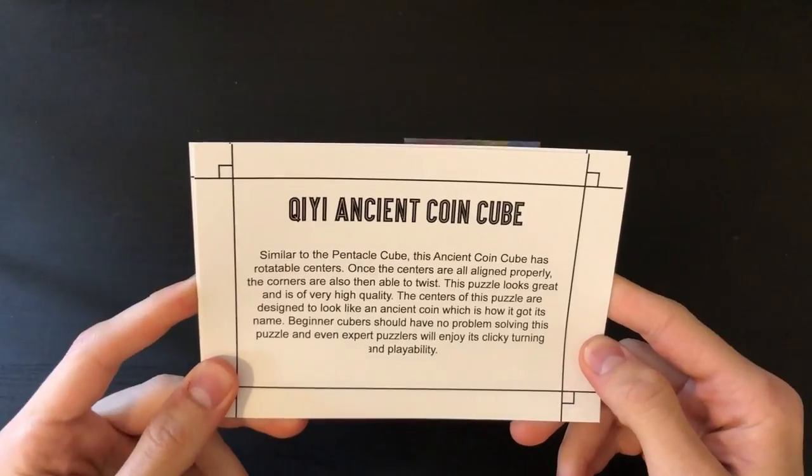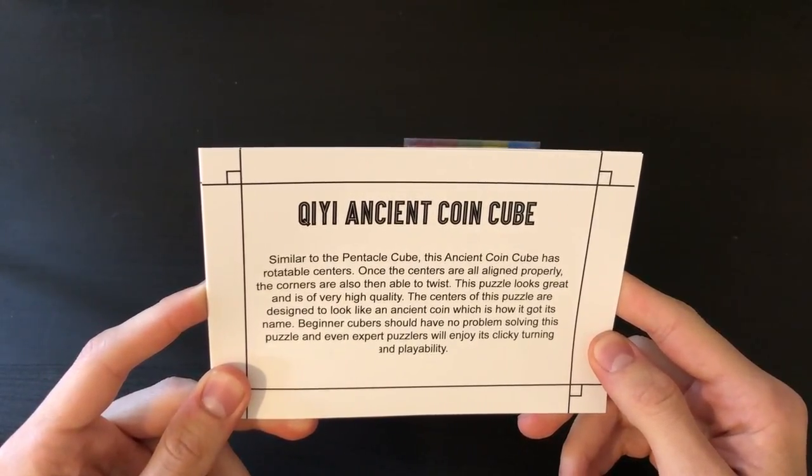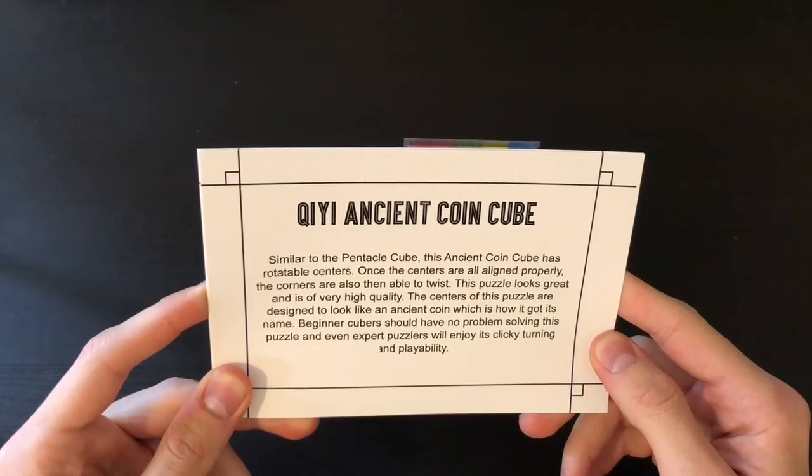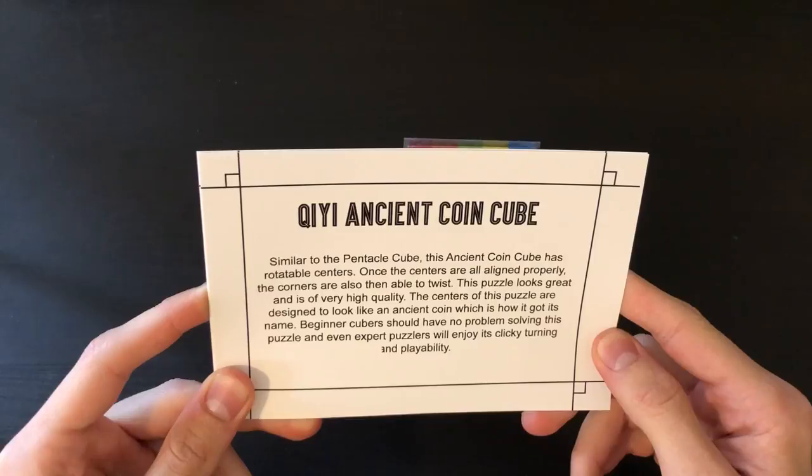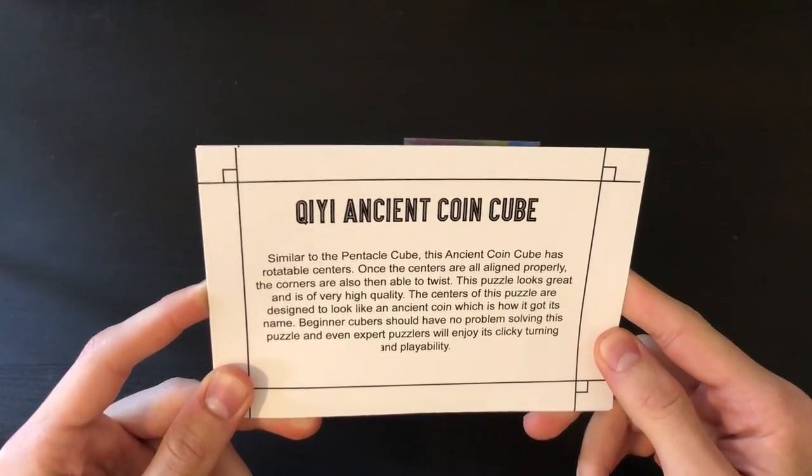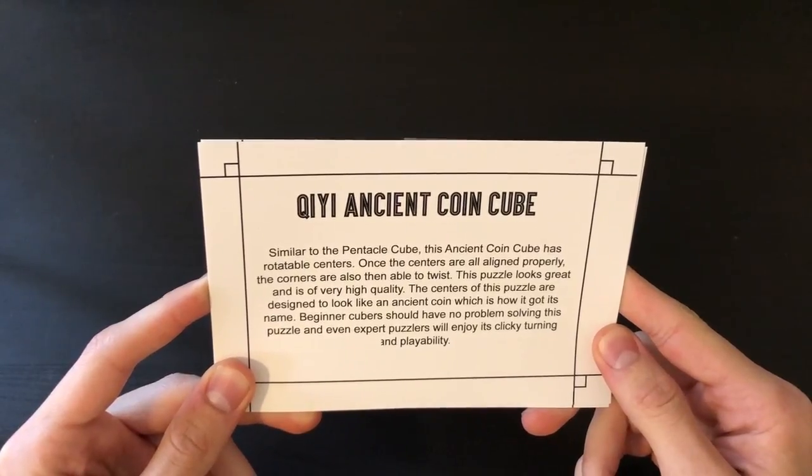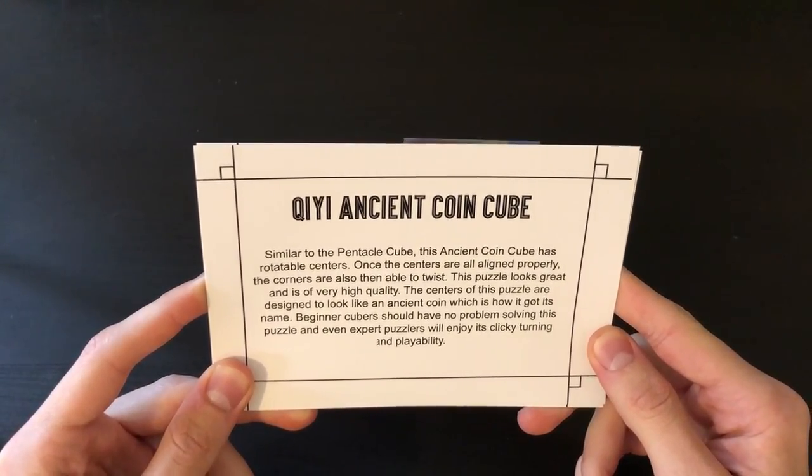Similar to the Pentacle Cube, this Ancient Coin Cube has rotatable centers. Once the centers are all aligned properly, the corners are also then able to twist. This puzzle looks great and is of very high quality. The centers of this puzzle are designed to look like an Ancient Coin, which is how it got its name. Beginner cubers just have no problem solving this puzzle, and even expert puzzlers will enjoy its clicky turning and playability.